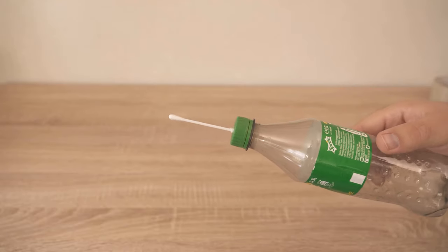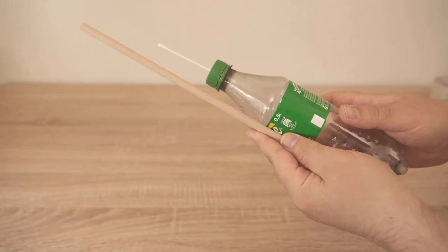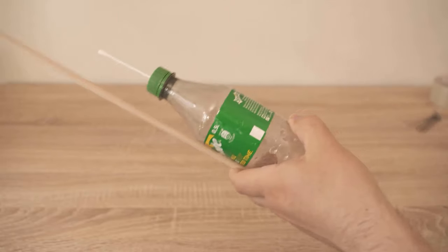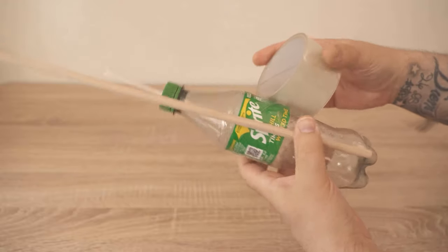In the next step we need a wooden stick. This should be much longer than the bottle. Then we can attach it to the bottle with tape. And this way you can build this automatic watering system for each of your plants that need water regularly.